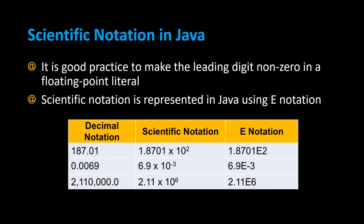Scientific notation in Java. It's good practice to make the leading digit non-zero in a floating point literal. Scientific notation is represented in Java using what's called e-notation.